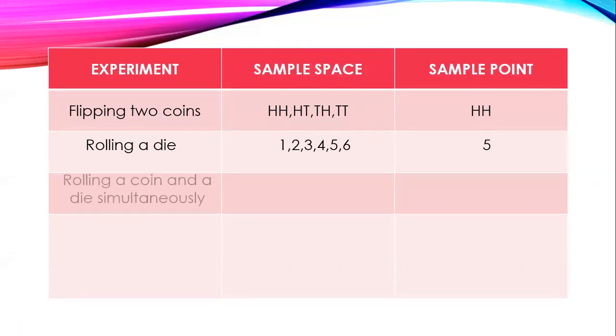Under experiment: rolling a coin and a die simultaneously. So rolling a coin and a die together at the same time. The possible sample space would be head-1, head-2, head-3, head-4, head-5, head-6, tail-1, tail-2, tail-3, tail-4, tail-5, and tail-6. So sample point could be tail-3.